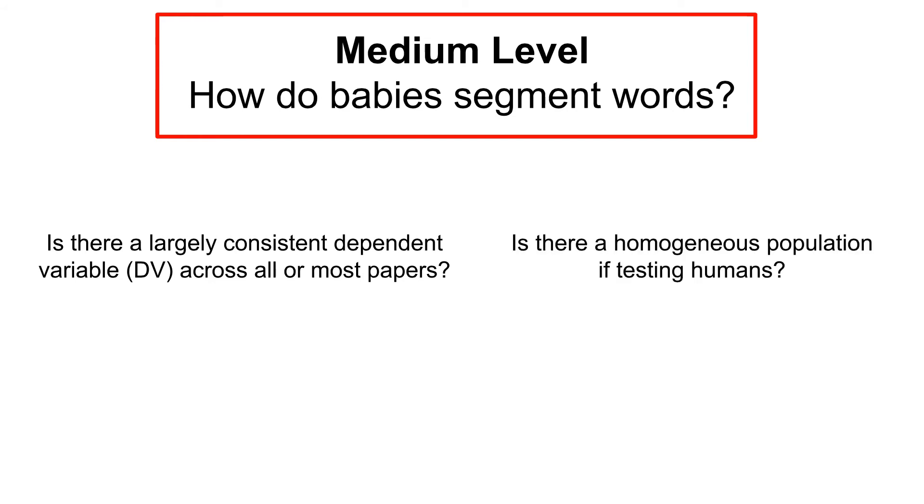Also important, is there a homogeneous population if testing humans? Homogeneous can mean many things: age, language, typical versus atypical.